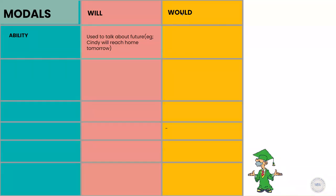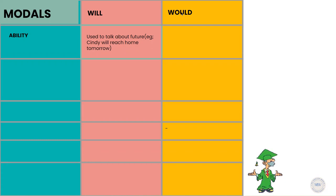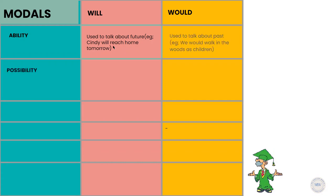We can also see that we are talking about something Cindy can do — we are also talking about her ability to reach home tomorrow. So will is used both as a future tense and to express ability in a future context.